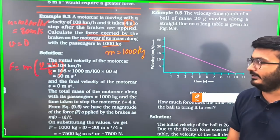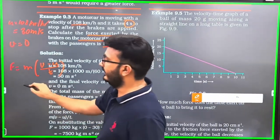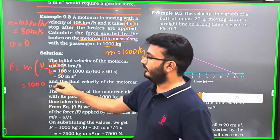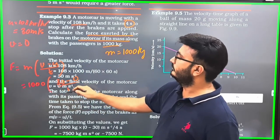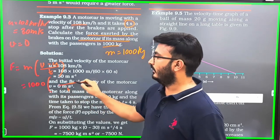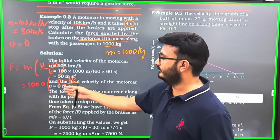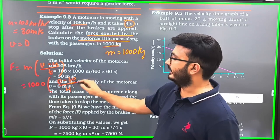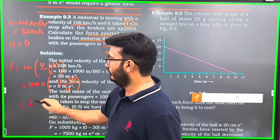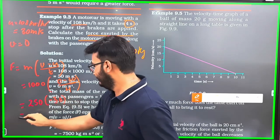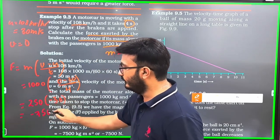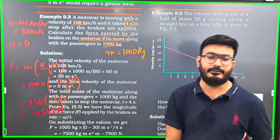Put it in. Mass being 1000, 0 minus 30, time given 4 seconds. This is minus 7500. So it's minus 7500. Minus 7500 Newtons.